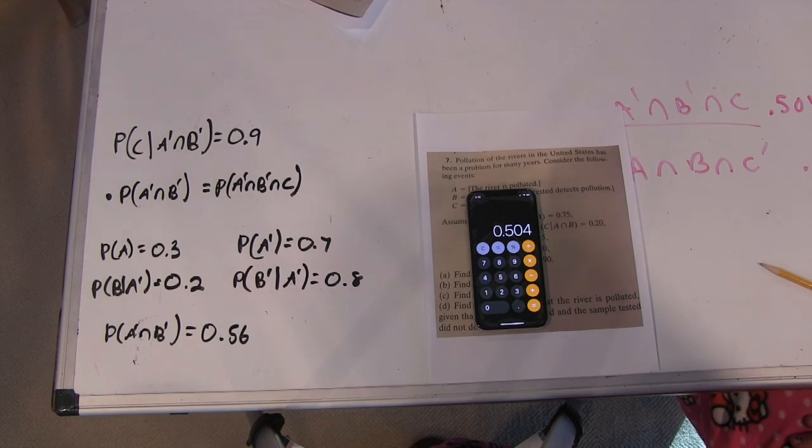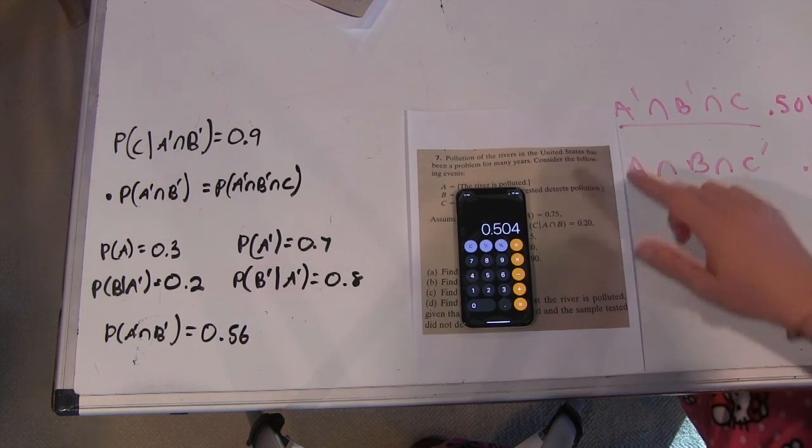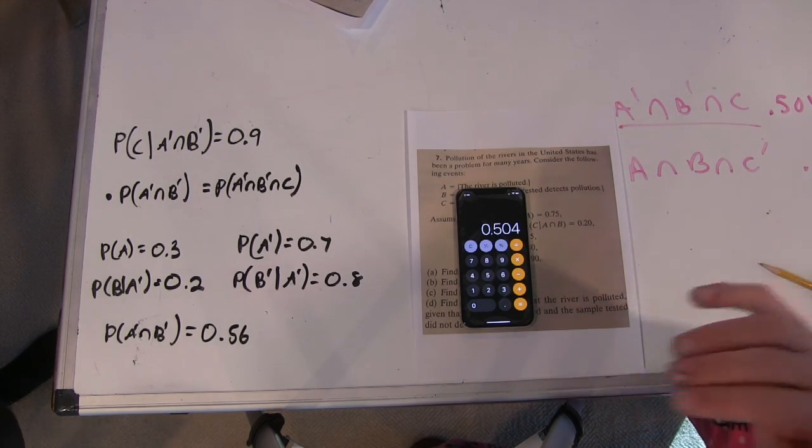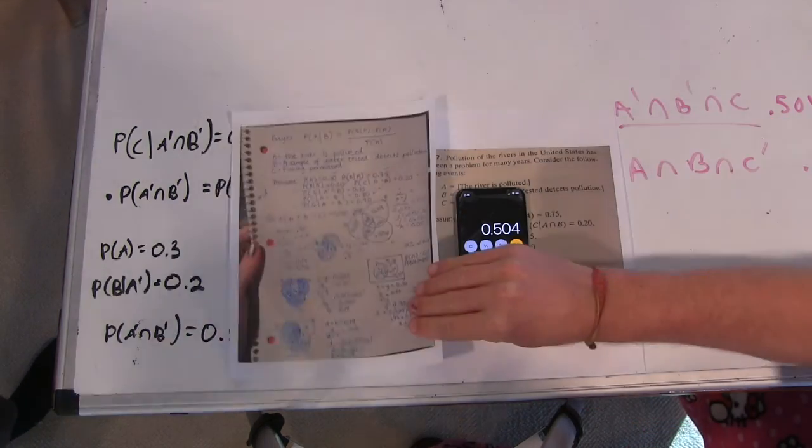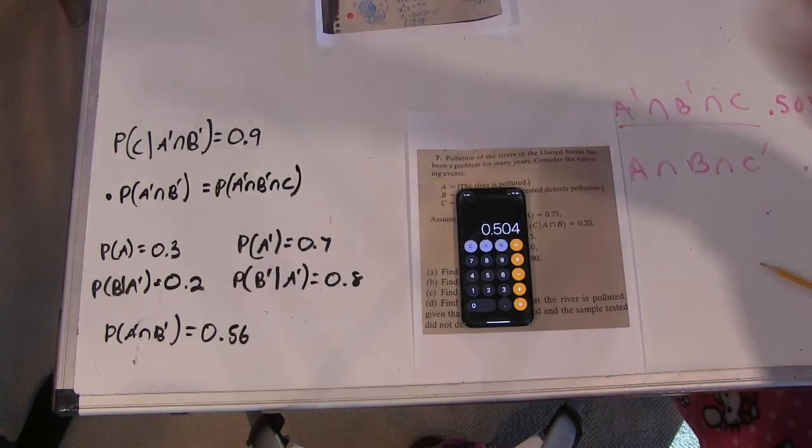Okay, so very good job. So you have calculated that in these sets A prime intersect B prime intersect C is 504, so you get your number and that agrees with the number in the Venn diagram. Yes. Okay, very good. Let's do the next calculation.